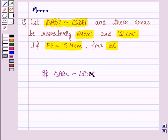then the ratio of the areas of two similar triangles is equal to the square of the ratio of the corresponding sides. That is, area of triangle ABC upon area of triangle DEF is equal to the ratio of the squares of the corresponding sides.